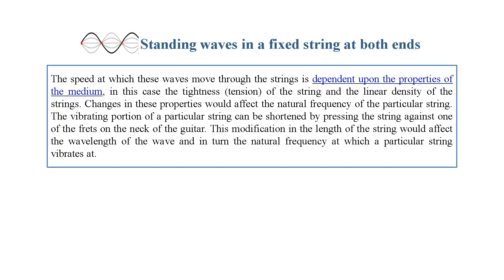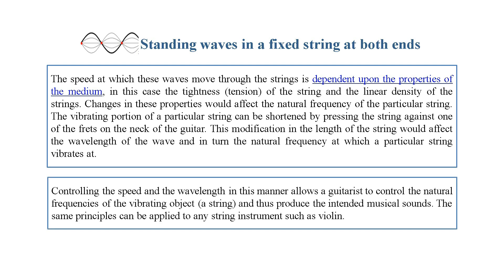The speed at which waves move through the strings depends upon the properties of the medium — the tightness of the string and the linear density of the strings. Changes in these properties affect the natural frequency of the particular string. The vibrating portion of a string can be shortened by pressing the string against one of the frets on the neck of the guitar. This modification in length affects the wavelength and in turn the natural frequency at which the string vibrates. Controlling speed and wavelength in this manner allows a guitarist to control the natural frequencies and produce the intended musical sounds. The same principles can be applied to any string instrument, such as a violin.